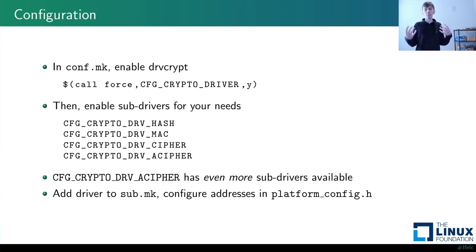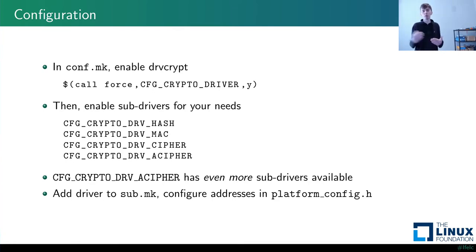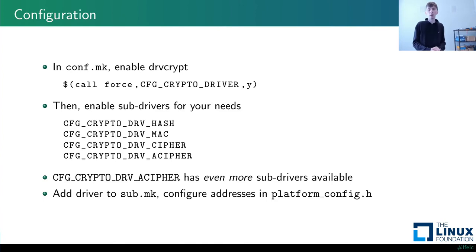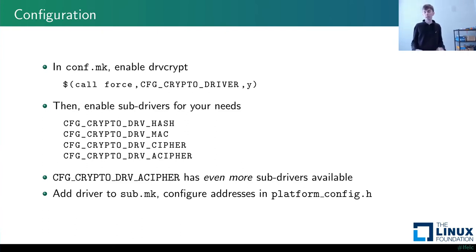To integrate with the build system, enable the DriveCrypt feature using the CFG_CRYPTO_DRIVER option. Each subsystem has its own support layer — add drive_hash, drive_mac, or drive_cipher as needed. For asymmetric ciphers, enable the specific asymmetric cipher option: RSA has its own option, ECC has its own, and so forth. There are too many options to enumerate, and they change rapidly, so check the repository to find what to enable for your asymmetric key cipher.